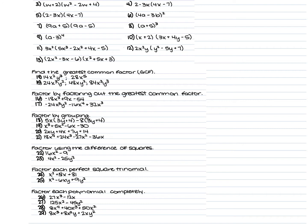Tomorrow on your test, it will not tell you — it will not prompt you what method to use. You'll just have to look at it and decide: I need to factor completely. Can I factor out a greatest common factor? If so, factor that out first. From there, do you have two terms, three terms, or four terms? Two terms — most likely a difference of squares. Three terms — most likely a perfect square trinomial. Four terms — factor by grouping. Walk yourself through those questions in order to find your final answer.